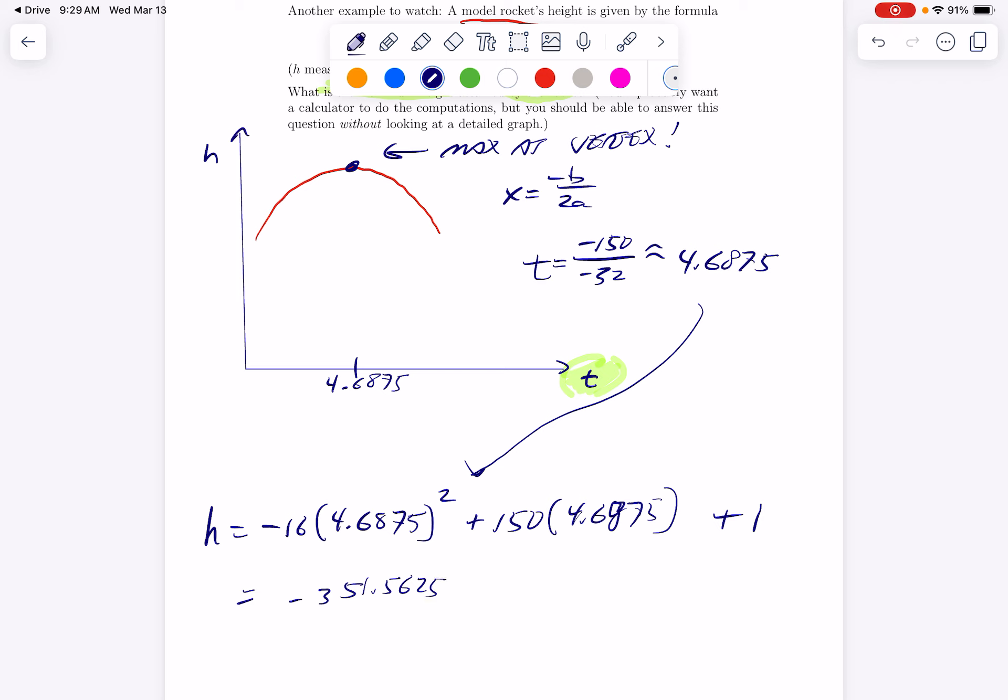So this part right here is negative 351.5625. The middle part is 703.125. So when we simplify the whole thing, if I'm not making a calculation mistake, I get 352.5625. And that is feet. So that is the answer to the question.